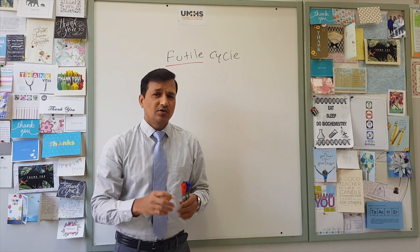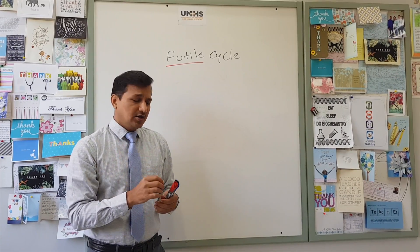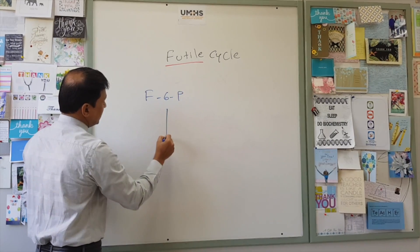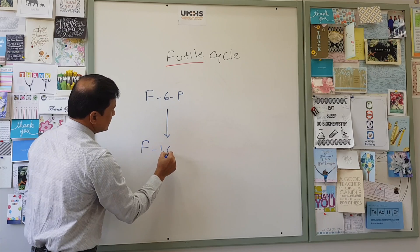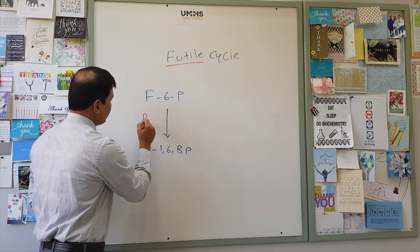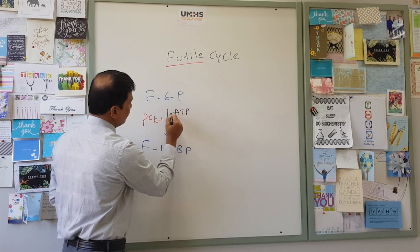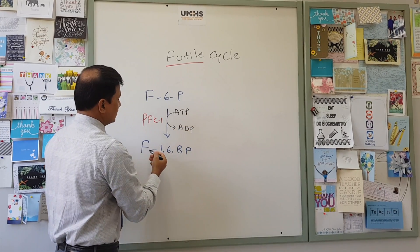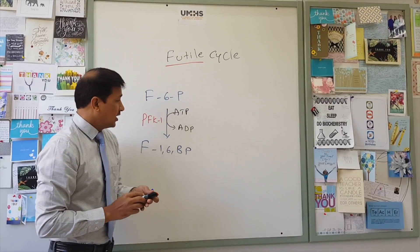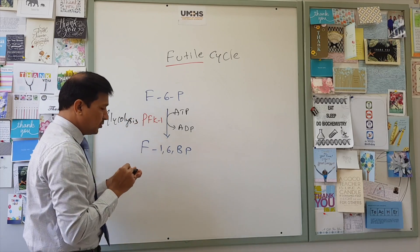The best example I can give you is glycolysis and gluconeogenesis. In glycolysis, there is a step where fructose-6-phosphate is converted into fructose-1,6-bisphosphate. This job is done by an enzyme called PFK1, that is phosphofructokinase 1. During this process, ATP — adenosine triphosphate — is converted into ADP, and one phosphate is incorporated into fructose-6-phosphate to make fructose-1,6-bisphosphate. That is the glycolytic step.